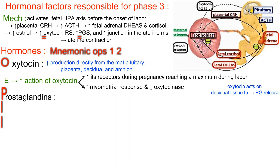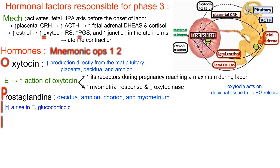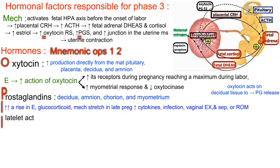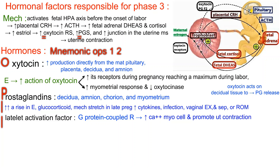P: Prostaglandins are the most important factors initiating and maintaining labor. Major synthesis sites are decidua, amnion, chorion, and myometrium. Synthesis is triggered by a rise in estrogen, glucocorticoids, mechanical stretching in late pregnancy, increased cytokines, infection, vaginal examination, and separation or rupture of membranes. Platelet activating factor (PAF) — its receptor is a G-protein coupled membrane receptor; PAF stimulation increases calcium levels in myometrial cells, promoting uterine contraction.